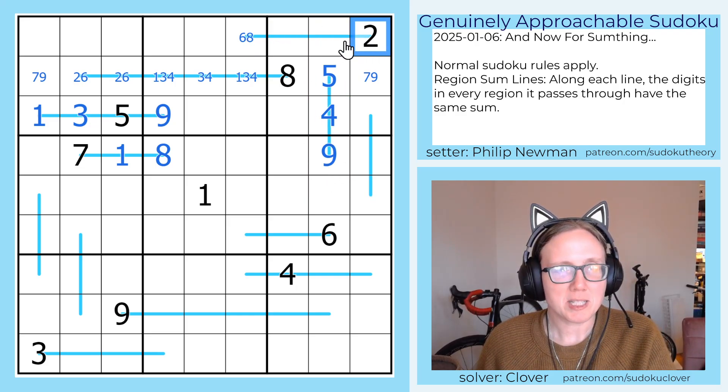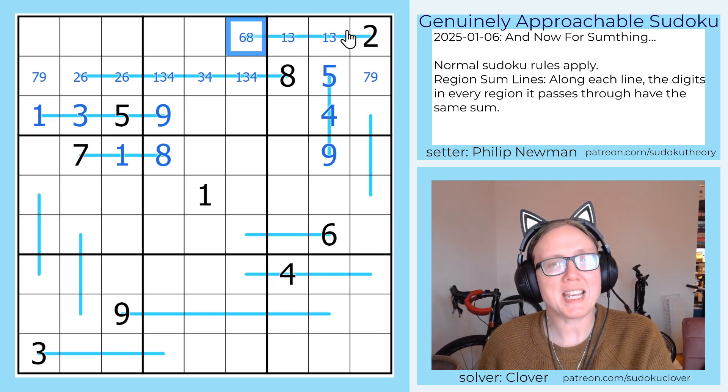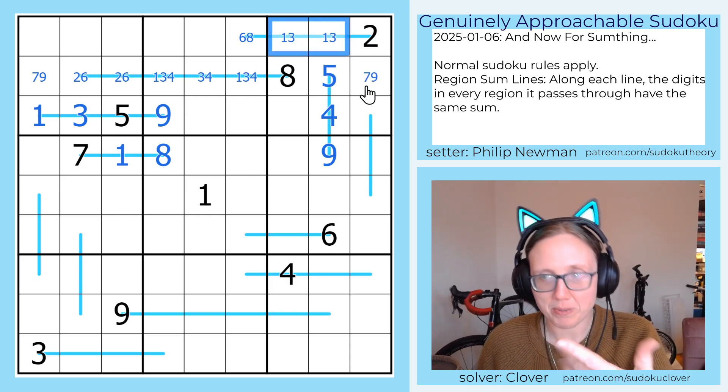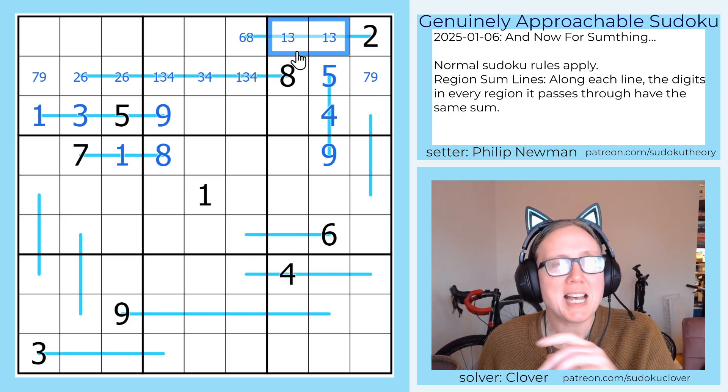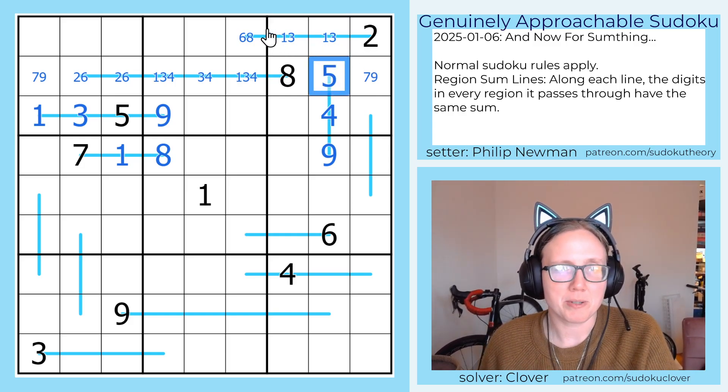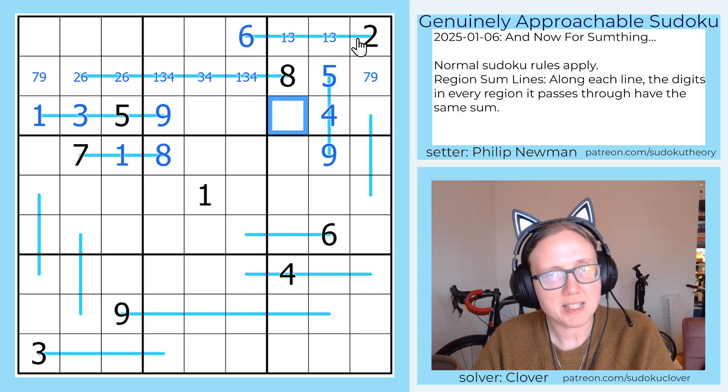So it's either 6, which would be 2, 1, and 3, or 8, which would be 2 plus 6. Now how do we make 6 without a 2? 1 plus 5. So the 8 would be 2, 1, and 5. And you'll notice that's also impossible because there's a 5 in the region already. So this must be a 6.